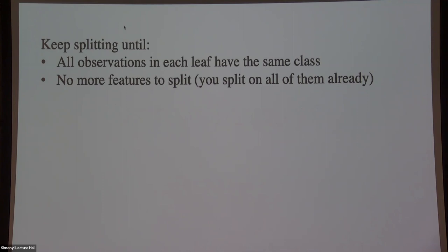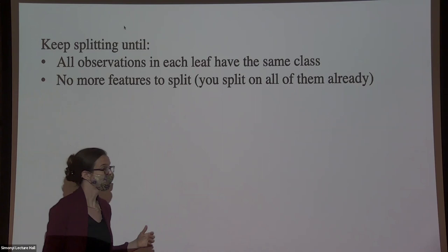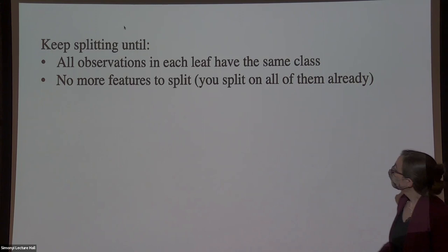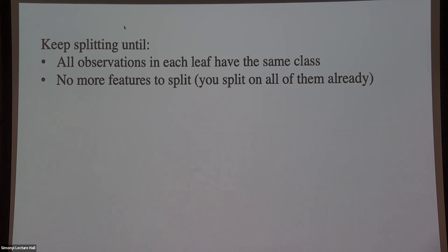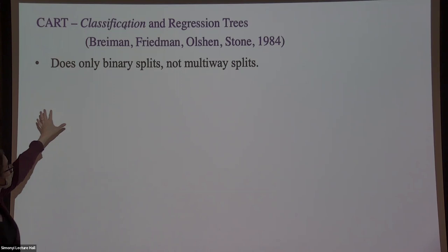What these algorithms often do is keep splitting until they can't split anymore — splitting until all observations in each leaf have the same class (pure leaves) or until there's nothing else to split on because you've already used all features. This seems like a bad idea because it's going to overfit the data. We have to figure out how to prune the trees back so they don't overfit.